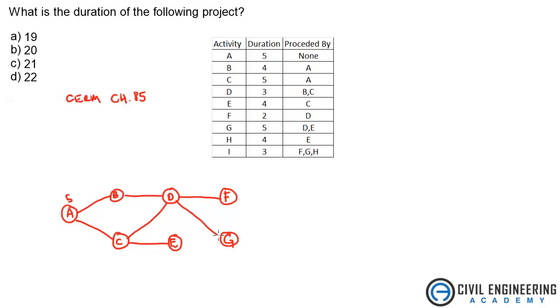G is preceded by D and E. D and E. H is preceded by E. And I is preceded by all three, F, G, and H. Here is I, the end of this project.